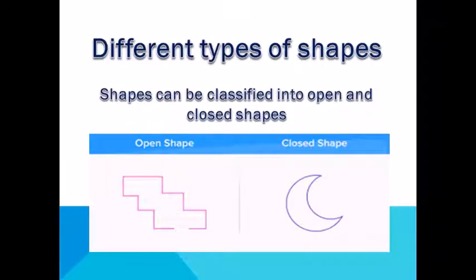Different types of shapes. Shapes can be classified into open and closed shapes. Here are examples of open shapes and closed shapes. Can you observe what are the differences in both shapes?